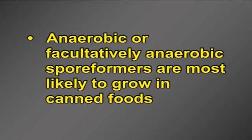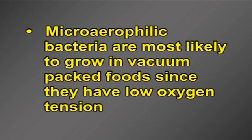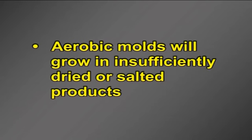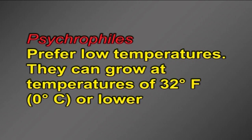Bacteria in this group are mainly spore formers and are of importance in the food industry, especially in processed foods. Anaerobic or facultatively anaerobic spore formers are most likely to grow in canned foods. Microaerophilic bacteria are most likely to grow in vacuum-packed foods since they have low oxygen tension. Aerobic bacteria are likely to grow on the surface of raw meat. Aerobic molds will grow in insufficiently dried or salted products. Psychrophiles prefer low temperatures and can grow at 32 degrees Fahrenheit (0 degrees Celsius) or lower.